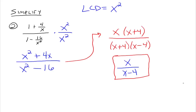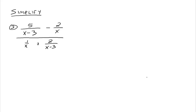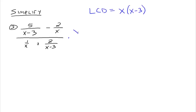Let's do one more. We have 5 over x minus 3, minus 2 over x, all divided by 1 over x plus 2 over x minus 3. The concept stays the same — find the least common denominator of all the little baby fractions. You've got x minus 3 and x up here, and x and x minus 3 down here, so the LCD is x times x minus 3. We're going to multiply both the numerator and the denominator of the bigger fraction by x times x minus 3.